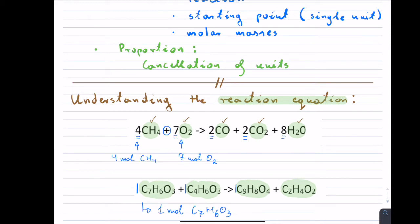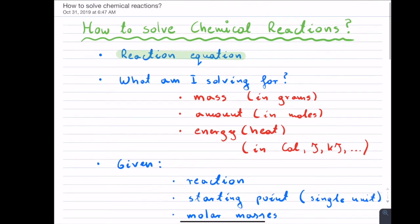We'll use that information to solve those problems. Once you understand that those numbers simply mean moles, the second thing you have to understand is what you are solving for. There is quite a trend in these chemical reactions — you typically get asked for just three things: some kind of a mass in grams, some kind of an amount which is counting the number of moles, or energy/heat — for instance from combustion like fire. Those are the only three quantities you'll get asked for, 99% of the time.